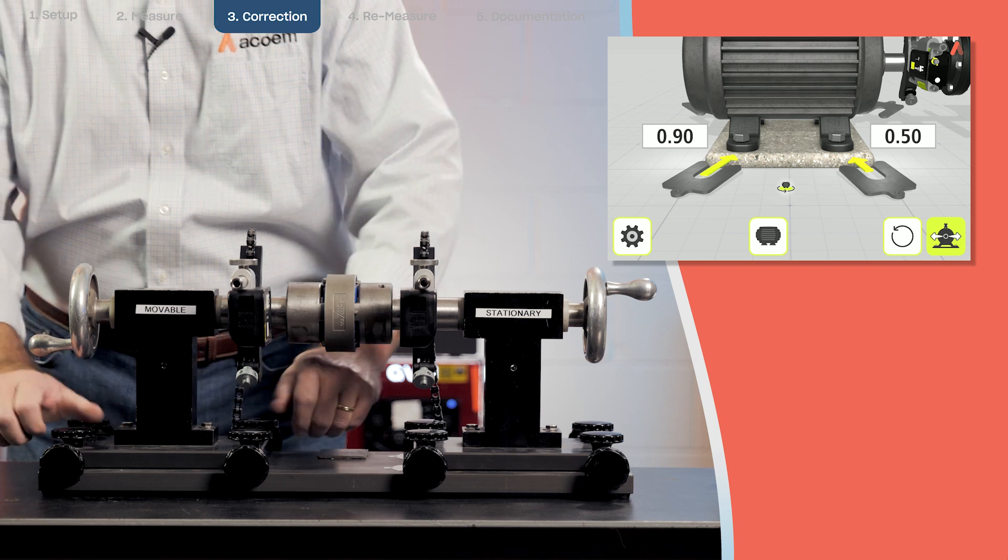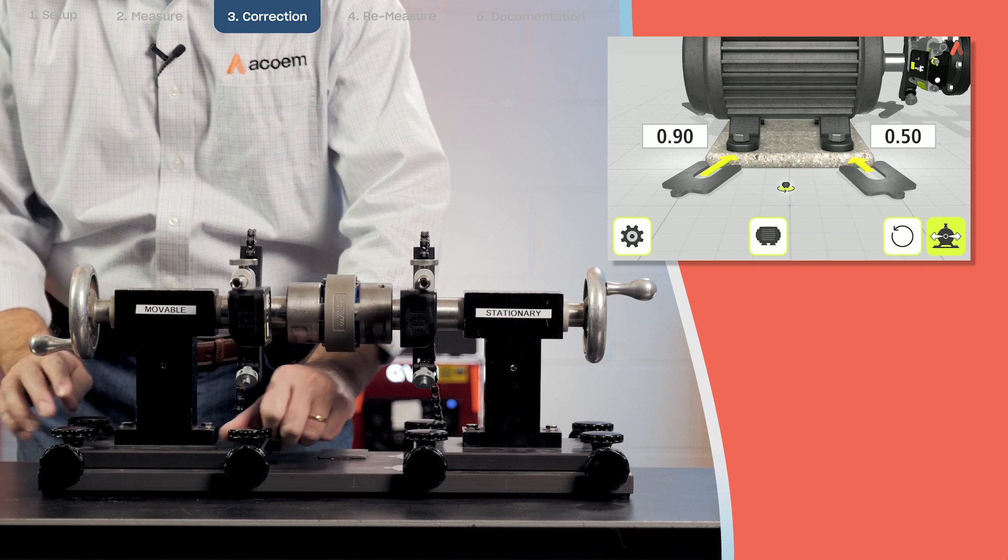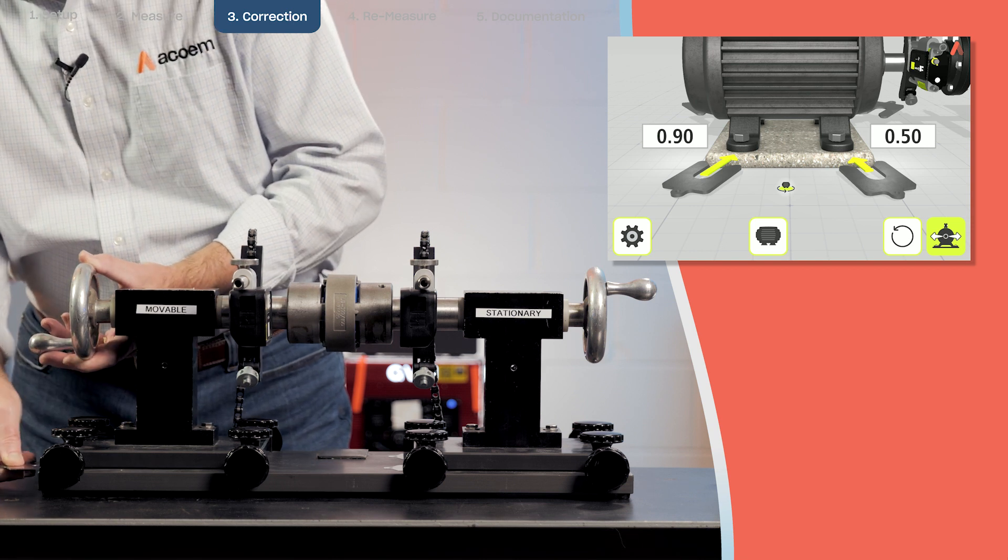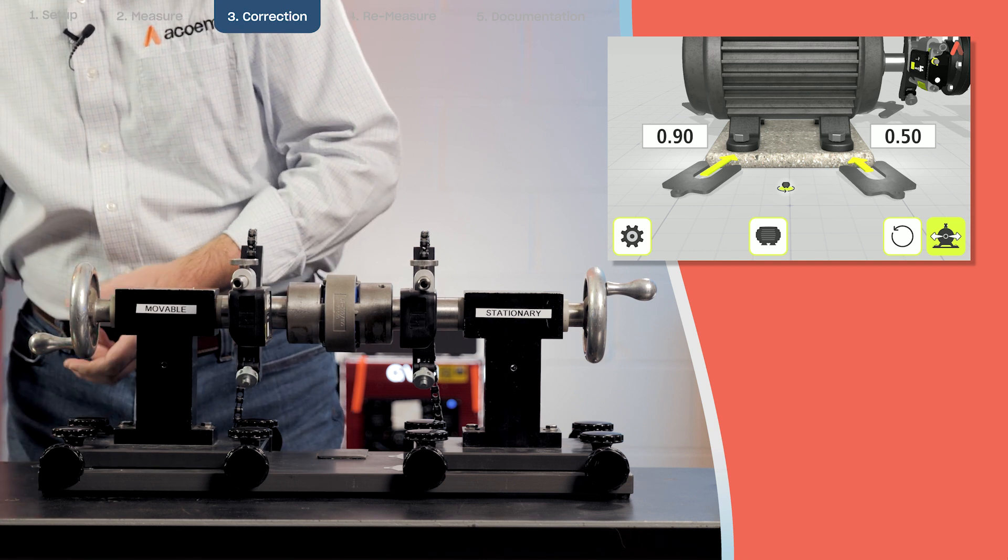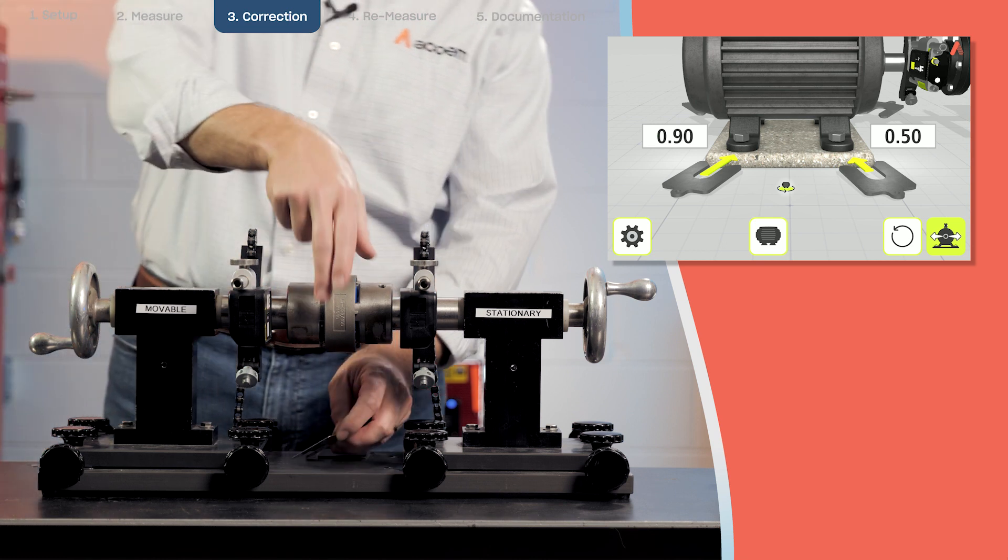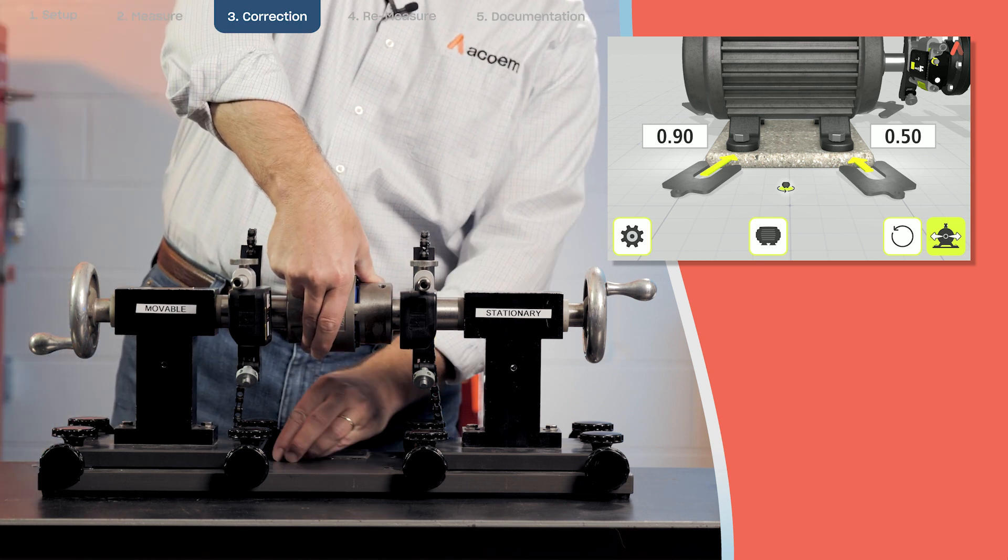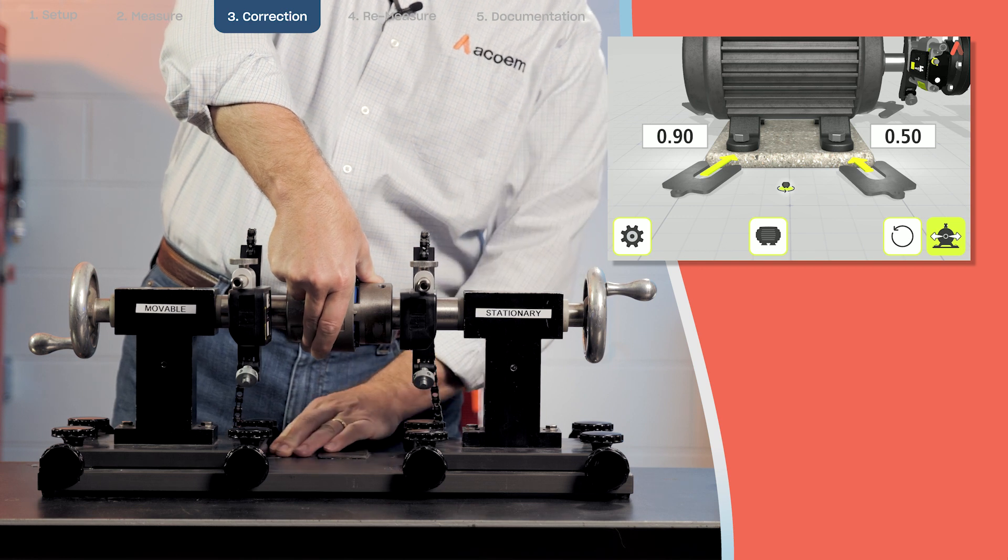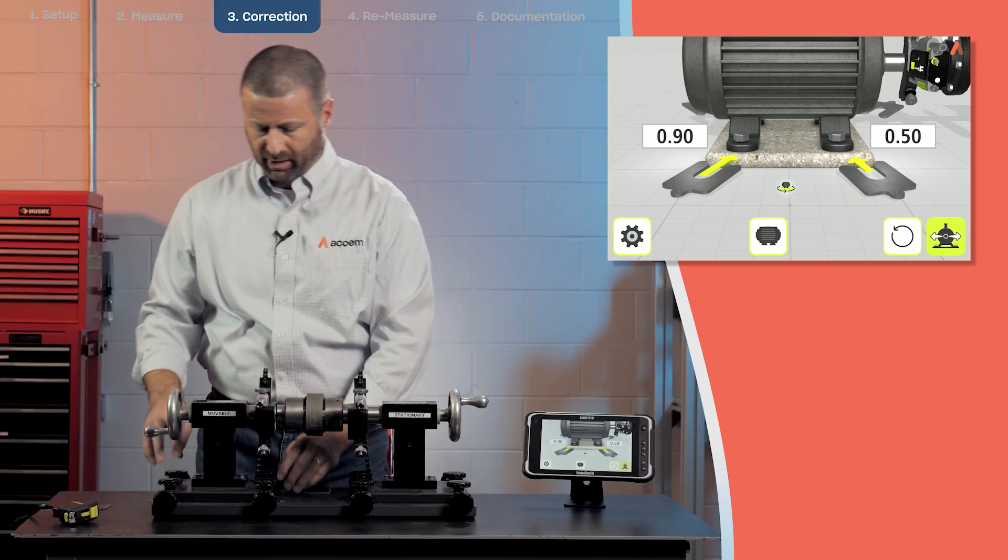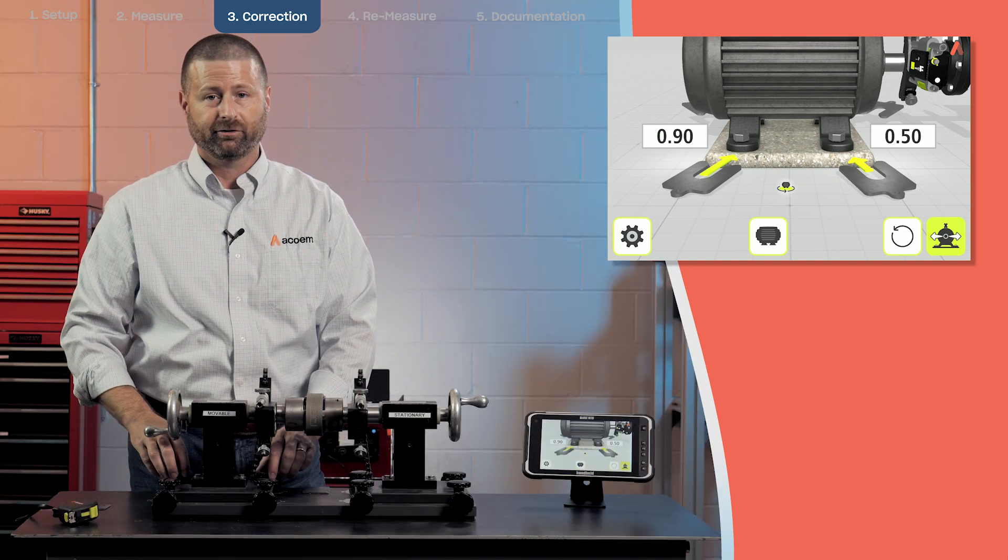I've got some shims prepared here for this adjustment. I'll make my rear adjustment first and then my front adjustment. Now once again, we call this vertizontal. We won't be tightening these motor bolts down because we will be making a horizontal adjustment at the same time.